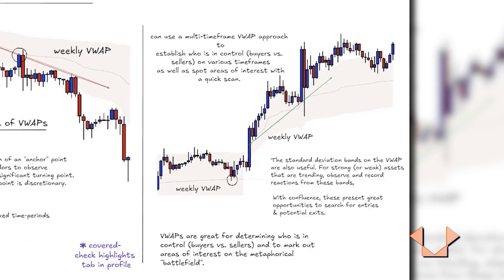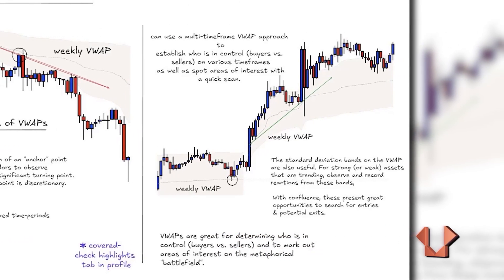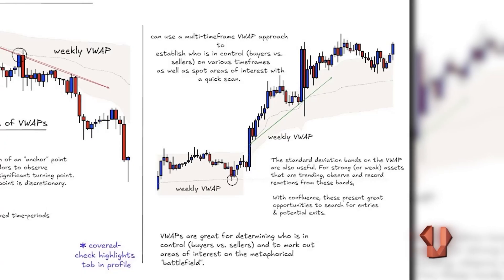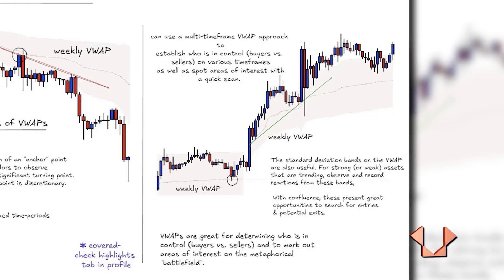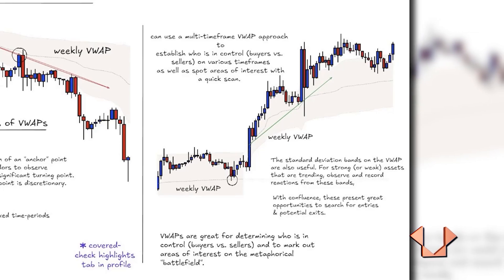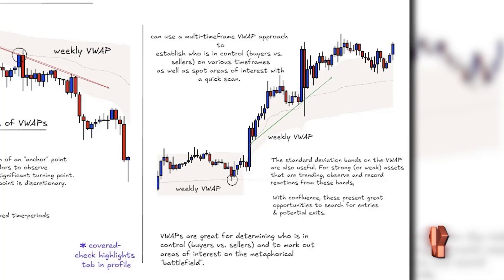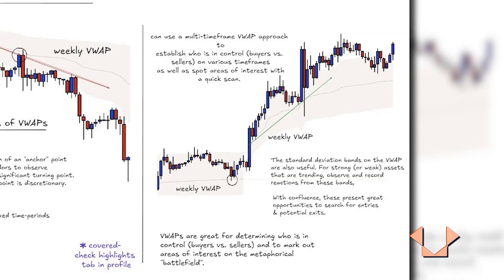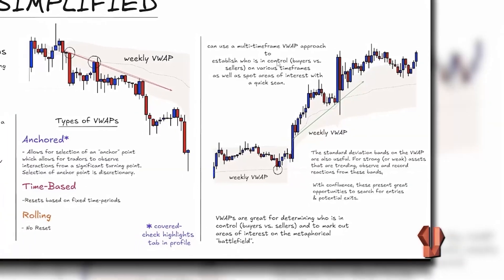You can use a multi-timeframe VWAP approach to establish who's in control on different timeframes and identify areas of interest very quickly. If you add standard deviation bands to the VWAP, you can spot strong or weak assets that are trending or showing weakness, and observe reactions from the edges of those bands. With confluence, these present great opportunities for entries or potential exits. In short, VWAPs are great for determining buyers versus sellers and marking out areas of interest on the battlefield.